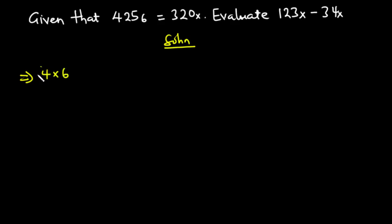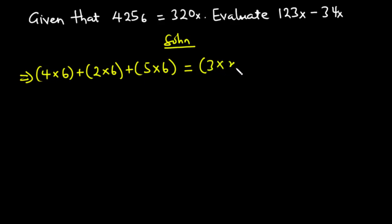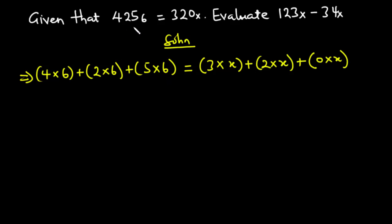For 425 base 6, we have 4 times 6 squared, plus 2 times 6 to the power 1, plus 5 times 6 to the power 0. For 320 base x, we have 3 times x squared, plus 2 times x to the power 1, plus 0 times x to the power 0. The exponents are introduced from right to left, starting from 0, giving exponents 0, 1, and 2 for both numbers.